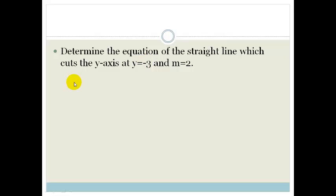So let's look at this example. We've got y equals mx plus c and they tell us that it cuts the y-axis at minus 3, which means that is our c, and the gradient is 2. So life is really easy because we've got 2x plus minus 3, which becomes 2x minus 3.